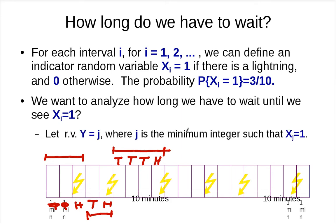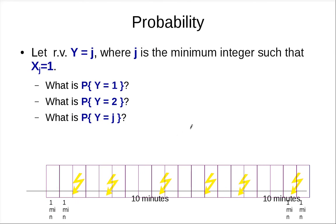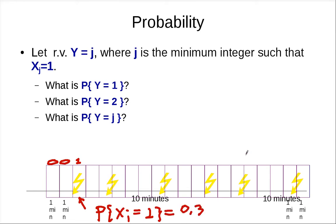This is exactly what we've learned before. So let's define random variable Y = j, where j is the minimum integer such that x_j is 1. You have a set of random variables — 0, 1, 0, 0, and so on — and you want to count the first time you see a 1. So Y is the random variable counting how long we have to wait until we see 1. The probability that x_i equals 1 is independent of other x's — this is 0.3, as we assumed before.